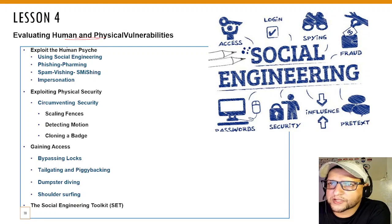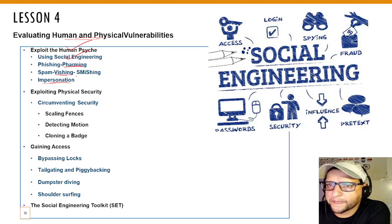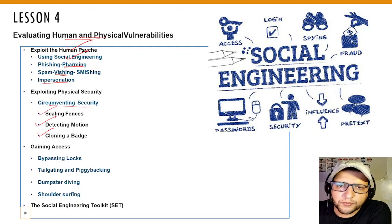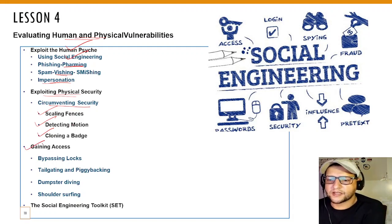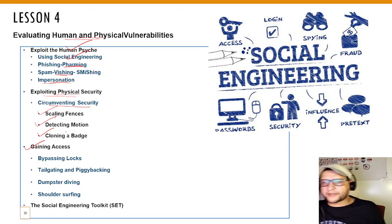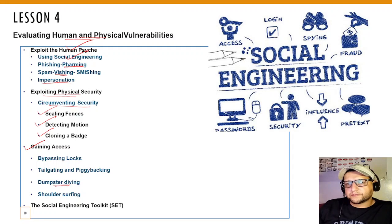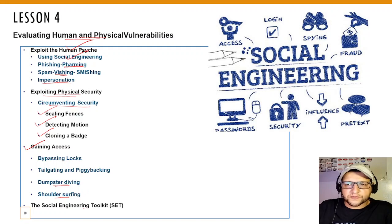Lesson 4 covers evaluating human and physical vulnerabilities. You'll learn how to exploit human psychology using social engineering — phishing, pharming, spamming, vishing, smishing, and impersonation. You'll also learn how to exploit physical security: circumventing security, scaling fences, detecting motion, cloning badges, bypassing locks, tailgating, piggybacking, dumpster diving, shoulder surfing, and using the Social Engineering Toolkit to create fake links and capture credentials.